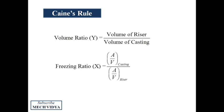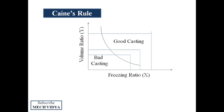So Caine observed that when a plot is made between these two ratios, we get a curve something like this. If for a particular casting and riser volume and surface area, if these two ratios coincides somewhere below the curve, the chances of getting a good casting are very less. Usually if we choose higher values of X and Y, we get good quality castings.